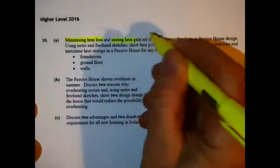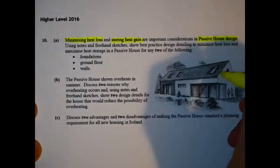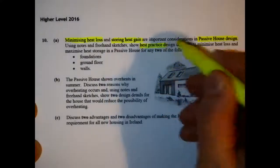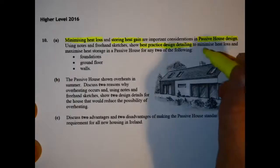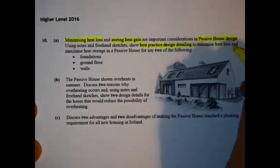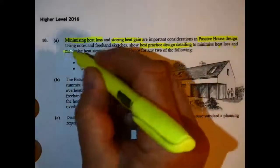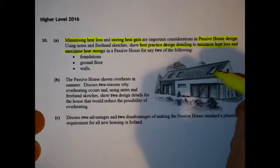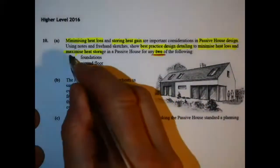In this question we are minimizing heat loss and storing heat gain. It is passive house design. We are looking for best practice and we want to be able to maximize the heat storage in the passive house. It gives us three options: foundation, ground floor, or walls.